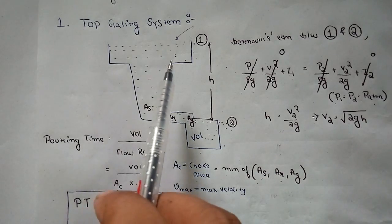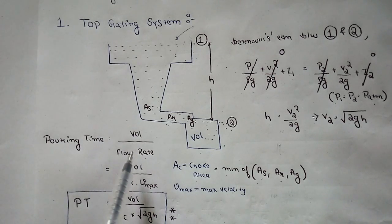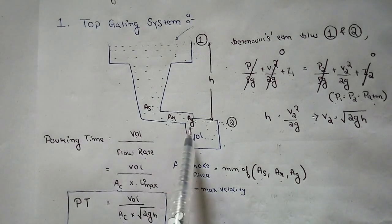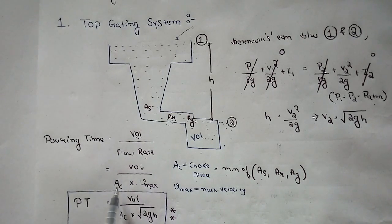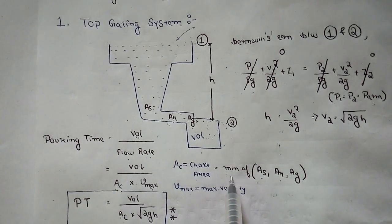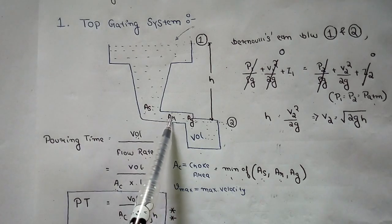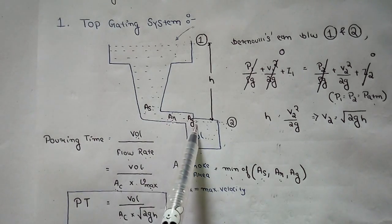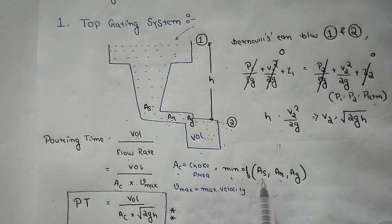To calculate the pouring time, remember this formula: pouring time equals volume divided by flow rate. Volume here is the volume of the mold cavity. Flow rate equals AC (the choke area) multiplied by Vmax. The choke area AC is the minimum of the sprue area (AS), runner area (AR), and ingate area (AG) — whichever is minimum equals the choke area.